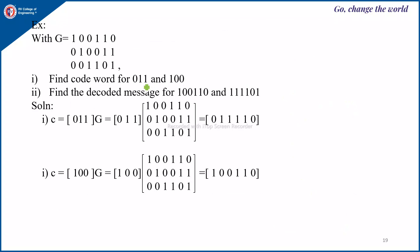Next, consider a problem where G is given as a generator matrix. We need to find the code words for messages 0,1,1 and 1,0,0, and then find the decoded messages for these code words. To find a code word, we multiply the message by G. For the message 0,1,1, performing binary multiplication with the generator matrix gives us the code word.